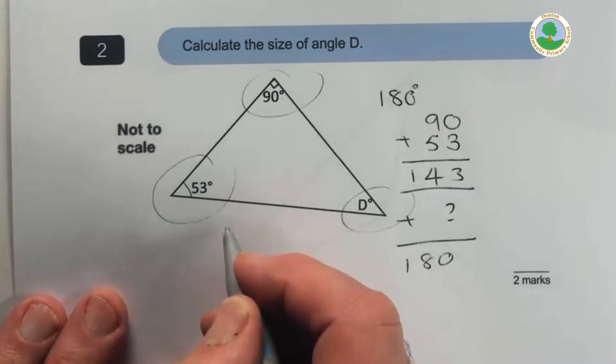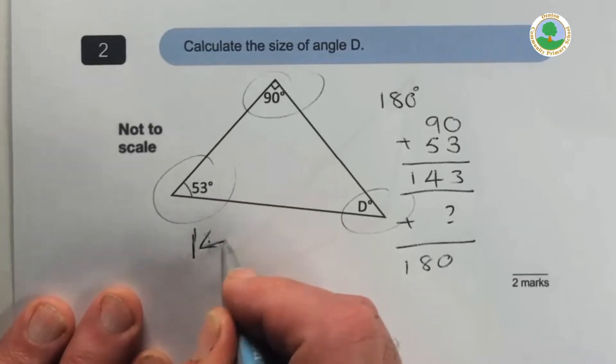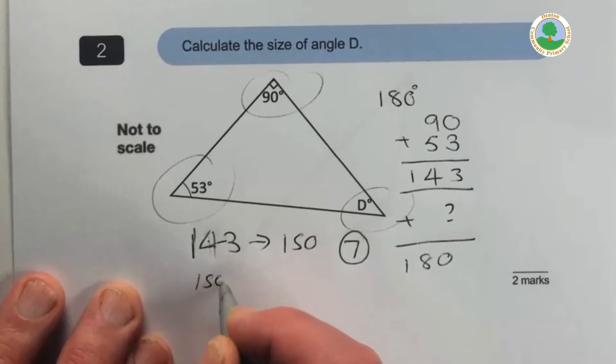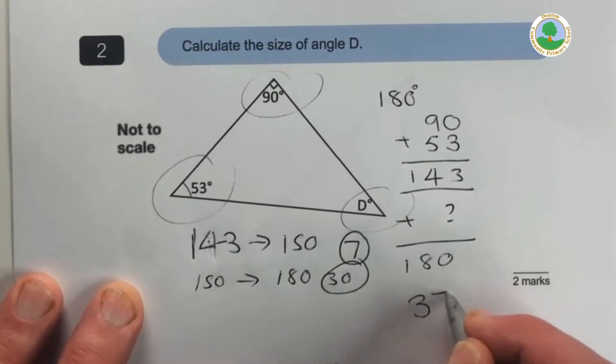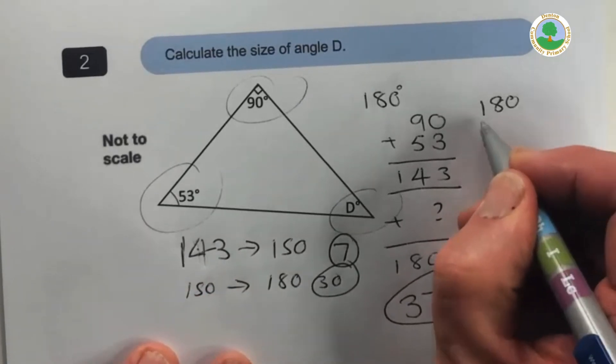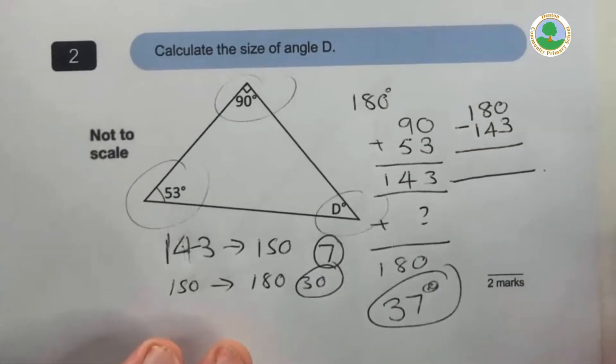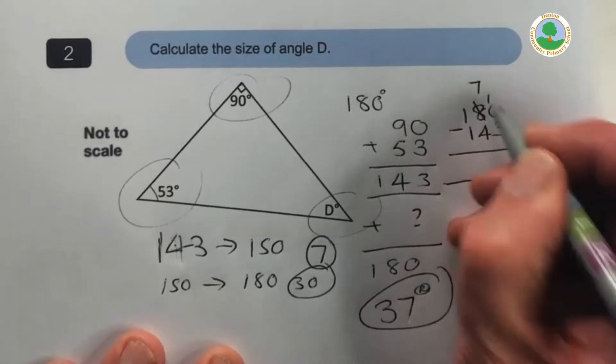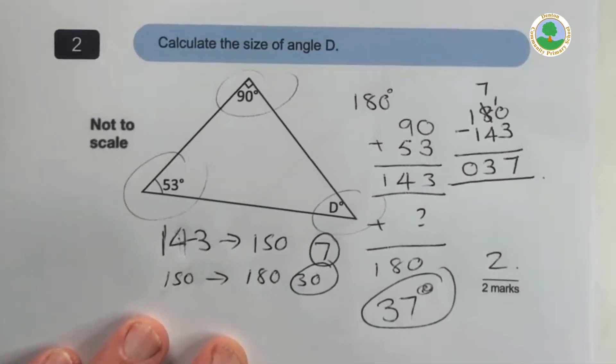And that would be 143. And so how much more do we have to have to get us to 180? Well, let's do a straightforward, I can either do it in my head, 140, 143 to 150, that's 7, and 150 to 180, that's another 30. So the answer is 37 degrees. But you can do it much more formally, 180 minus 143. Sometimes when you're under pressure, the formal methods are very useful to fall back on. So I'm going to do what I'm sure you all know. And I get the same answer. And I get two marks. There we go.